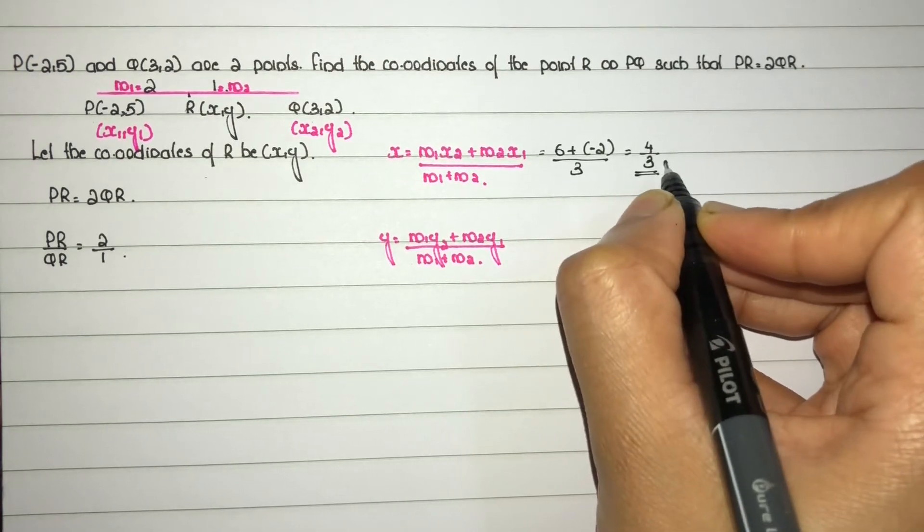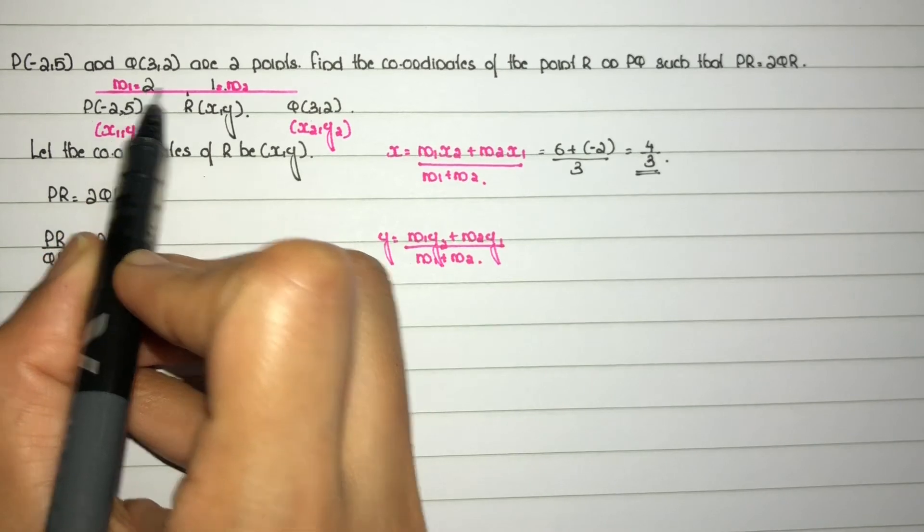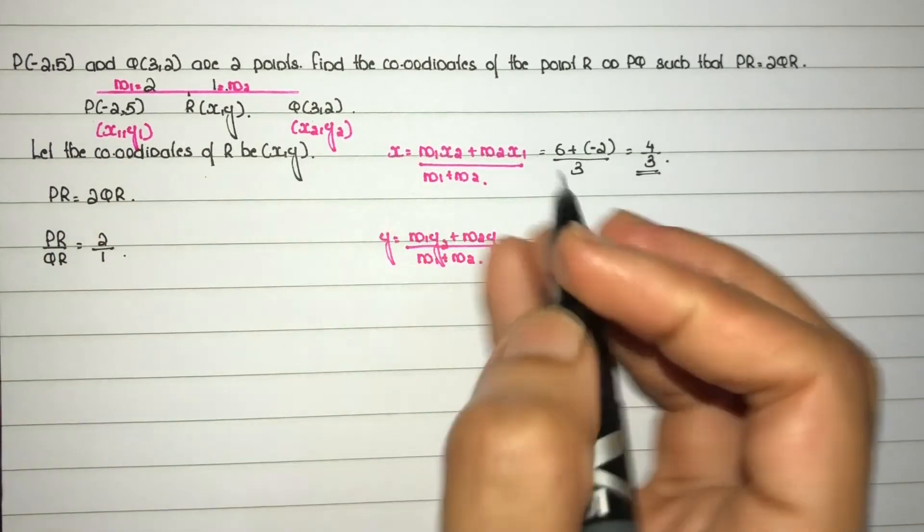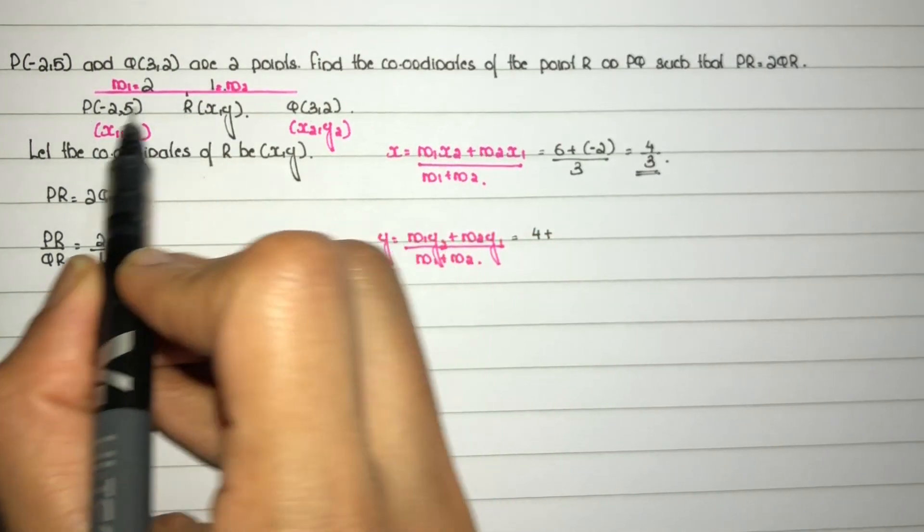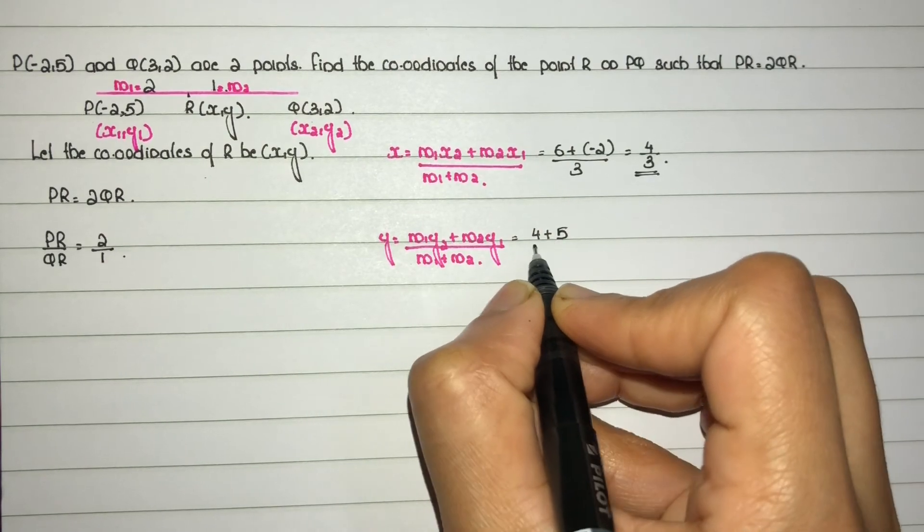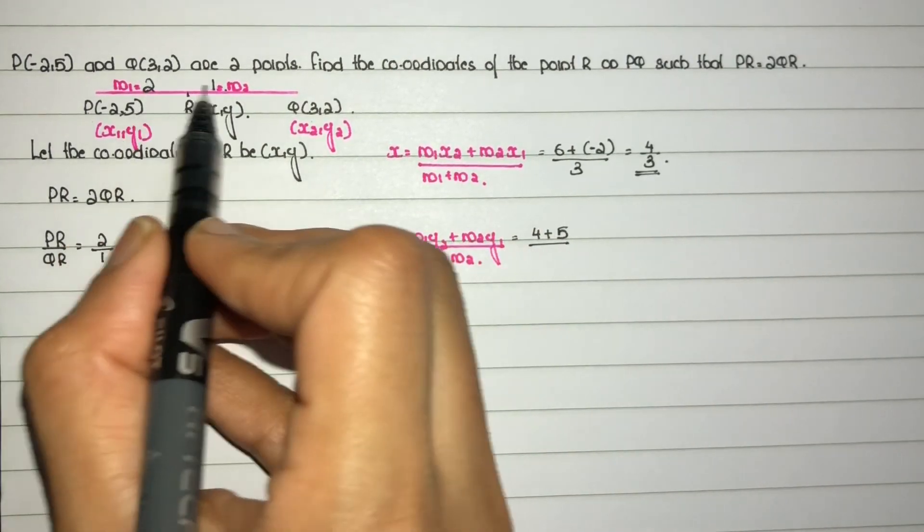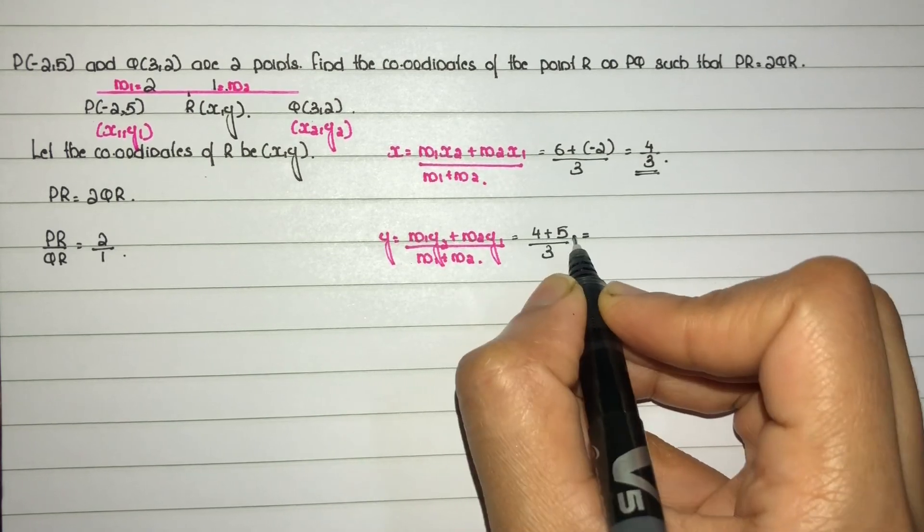Next, the y-coordinate: m1 into y2, that is 2 into 2 equals 4, plus m2·y1, which is 1 into 5 equals 5, divided by m1 plus m2, which is 2 plus 1 equals 3. So (4 + 5) equals 9 by 3, which is 3.